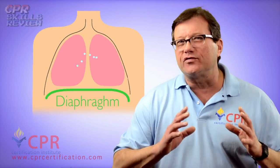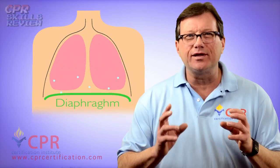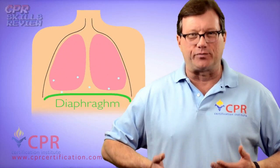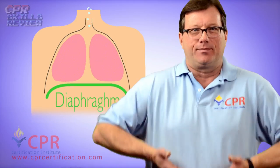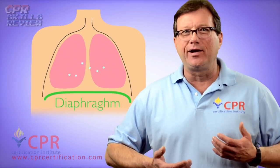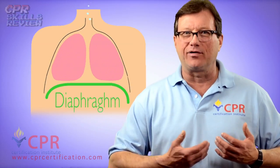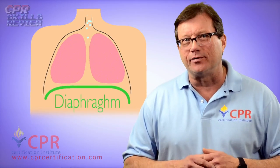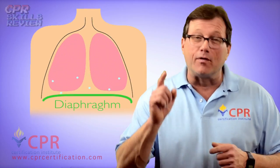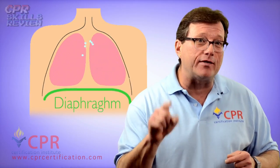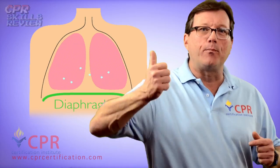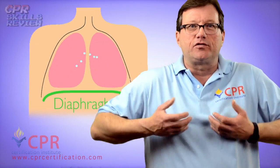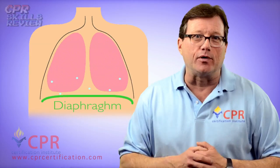When we're doing abdominal thrusts, we're really doing diaphragm thrusts — we've got to get that diaphragm moving upward. However, the only way to get to the diaphragm from the outside is through the abdomen. That's why we do abdominal thrusts. But remember, the direction has to be upward — got to move that diaphragm up, increase the pressure in the chest, and knock that obstruction out of their throat.